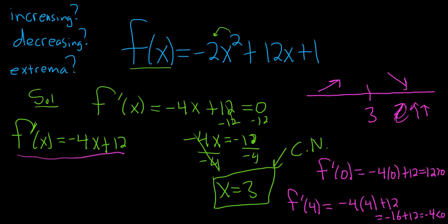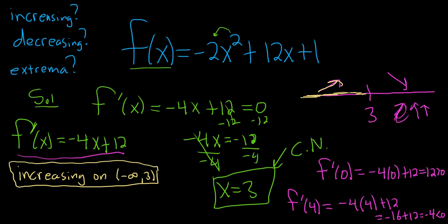So now we can write down almost all of the answers. So from negative infinity to 3, the function is getting bigger. So it's increasing. So increasing on negative infinity comma 3. It's really important to use parentheses whenever you're describing intervals where functions are increasing or decreasing.